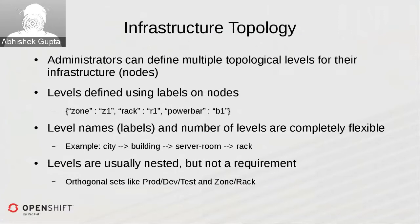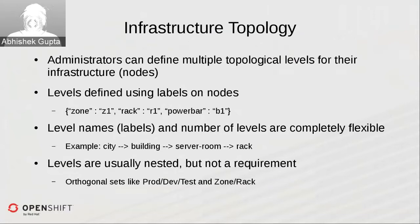You're completely free to specify labels like city, building, server room, racks, and so on. Levels are usually nested, but that's not enforced. You can also have orthogonal sets of node clusters — for example, prod, dev, test as one categorization set, and an orthogonal set of zone and rack, where a zone could have nodes from both prod, dev, and test. It depends on the requirement.